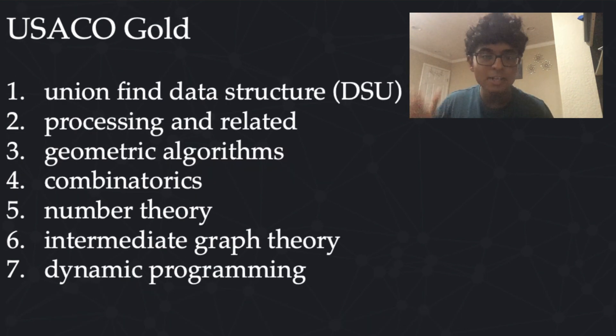Next we have the gold division. So we're going to start off with union-find data structure, also known as DSU. So this is useful for cycle finding and connected components. Then we have algorithms-related processing, such as sorting queries in a specific order for offline processing. And doing range processing, such as using Fenwick trees, also known as BITs, segment trees, order statistics trees, etc.